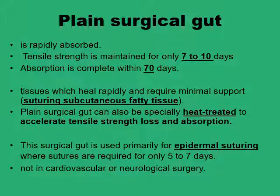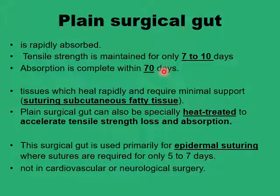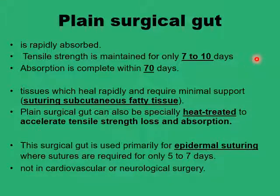The plain surgical gut sutures are produced from purified collagen and they lose their tensile strength quickly. Within seven to ten days they would lose most of their tensile strength, but they will linger around in the tissues for much longer, up to almost 10 weeks. By then they wouldn't be functioning and would just be like a foreign body. Because they lose their tensile strength quickly, they are used mainly when support is needed for subcutaneous fascia, fatty tissue, or ligating small blood vessels. They are not for use in cardiovascular or neurological procedures. Sometimes the purified gut can be heat-treated, which will accelerate both the loss of tensile strength and the rate of absorption.